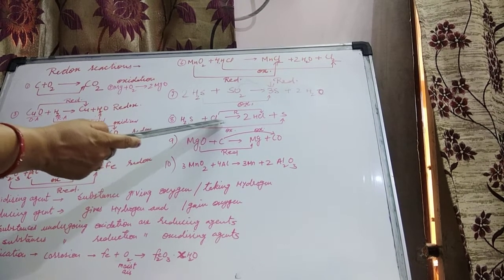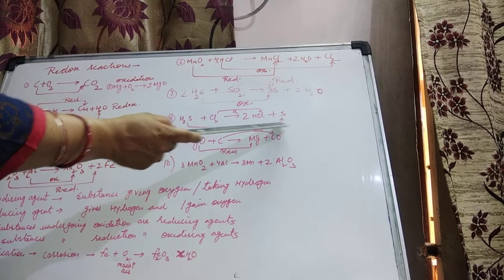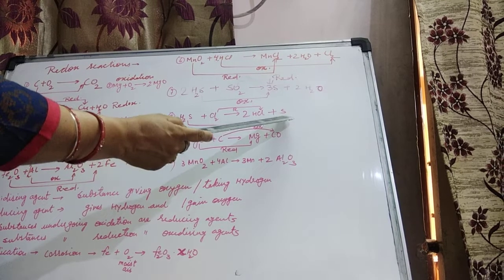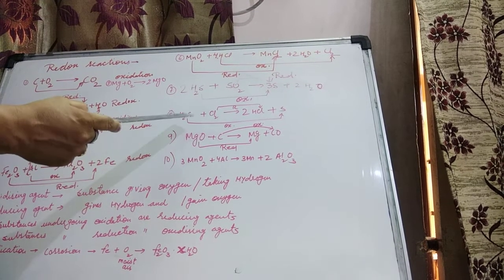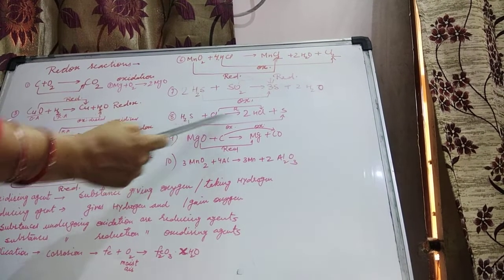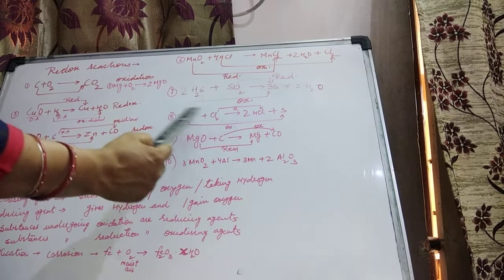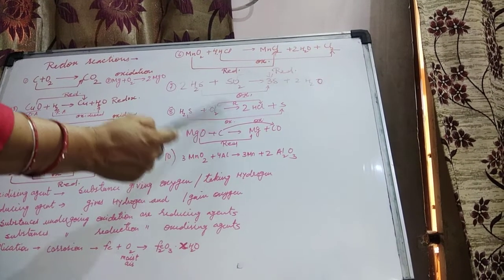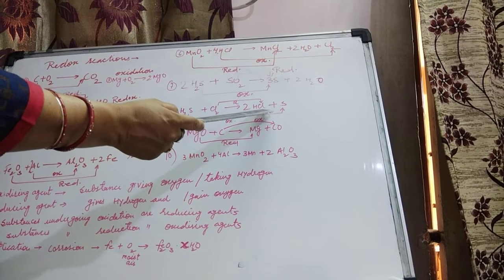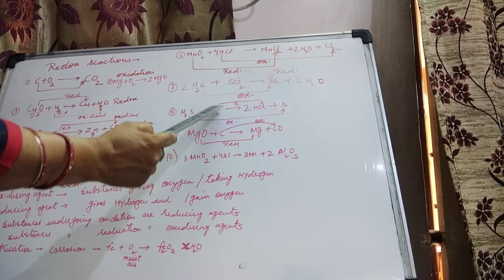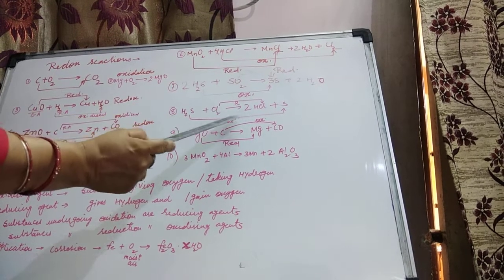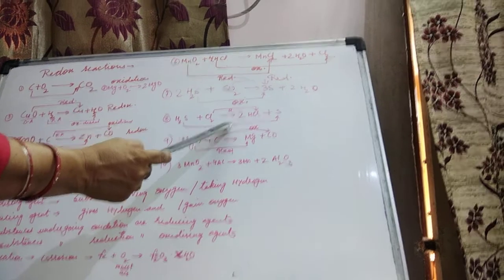Next reaction: H₂S plus Cl₂ gives 2HCl plus S. H₂S is converted into Sulfur — Hydrogen is getting removed — removal of Hydrogen is Oxidation. Cl₂ is converted into HCl — addition of Hydrogen — addition of Hydrogen is Reduction. Since Reduction and Oxidation both take place simultaneously, this reaction is Redox.